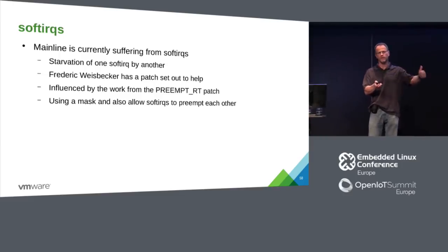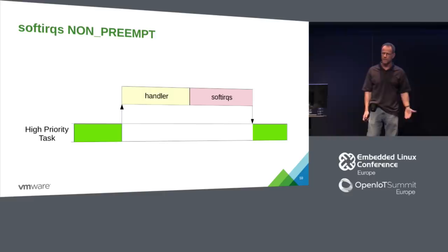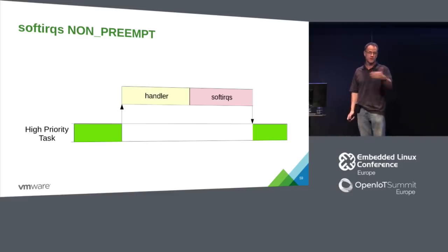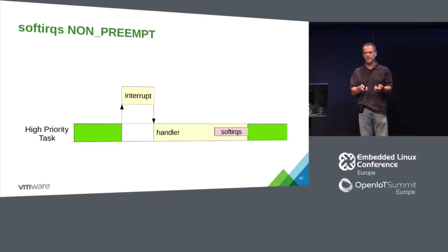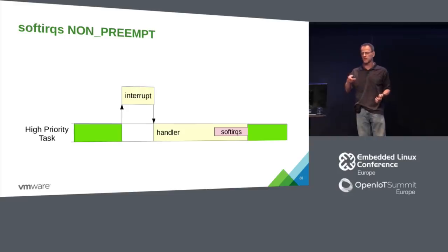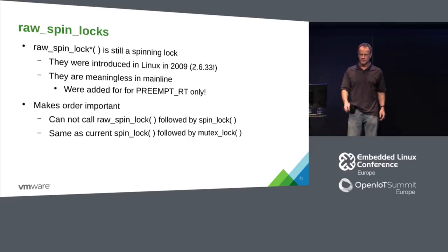The way we handle it on PREEMPT_RT: once you do the raise, it sets a flag in the task struct saying this task raised it. So it runs under that task's priority — he asked for it, let him take the penalty for it. For non-real-time tasks, the interrupt handler goes off, runs soft IRQ handlers including RCU and whatever else, then the high-priority task has to wait. We're working to fix that slide.